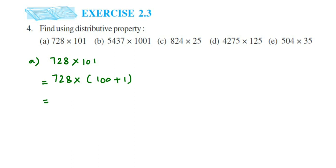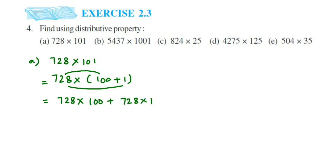Multiply 728 with 100, then plus 728 multiplied by 1. Whenever you multiply with 100 or 1000, you just put the zeros at the end. We have 2 zeros, so we will get 72800 plus 728. When you multiply 728 with 1, you get 728. Now add these two numbers and you will get 73528.